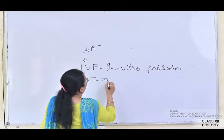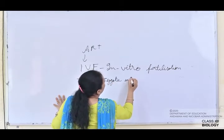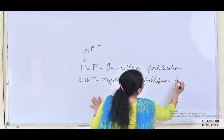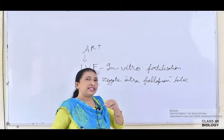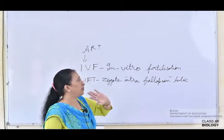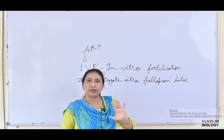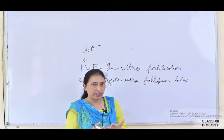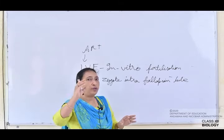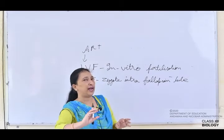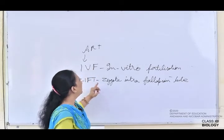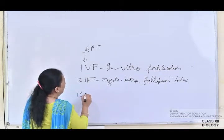Next is ZIFT — Zygote Intra Fallopian Transfer. Unlike IVF where the blastomere is implanted in the uterus, in ZIFT the zygote is first fused under laboratory conditions and then implanted in the fallopian tube. From the fallopian tube it descends down, implants itself in the uterus, and further development takes place.